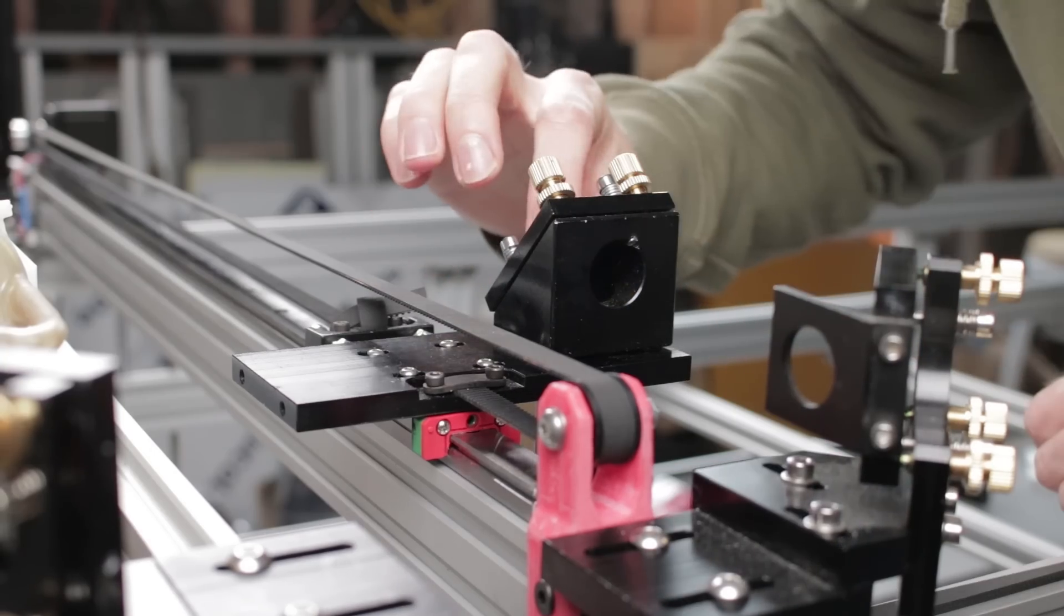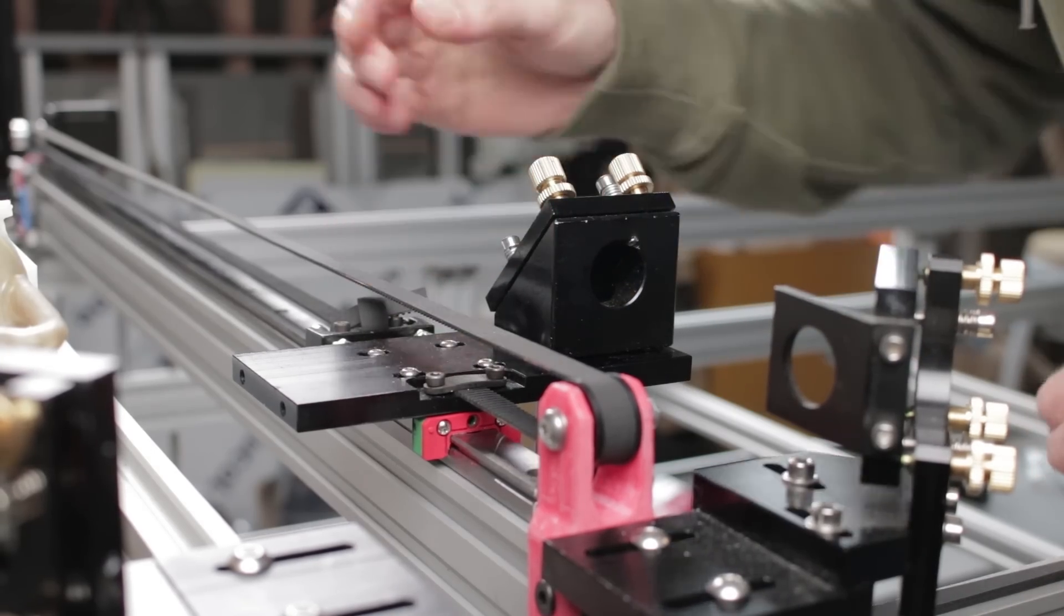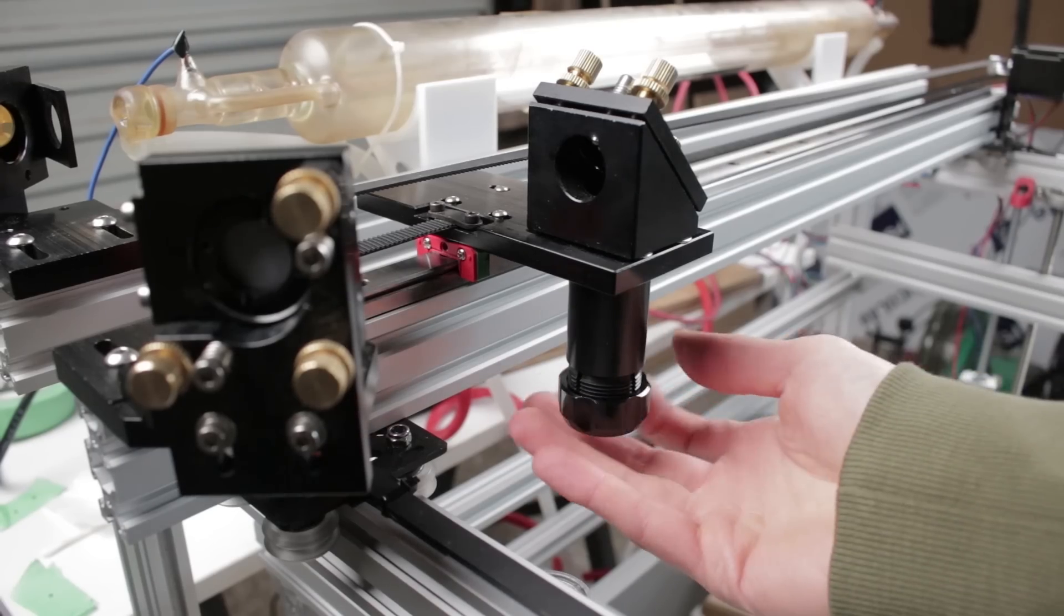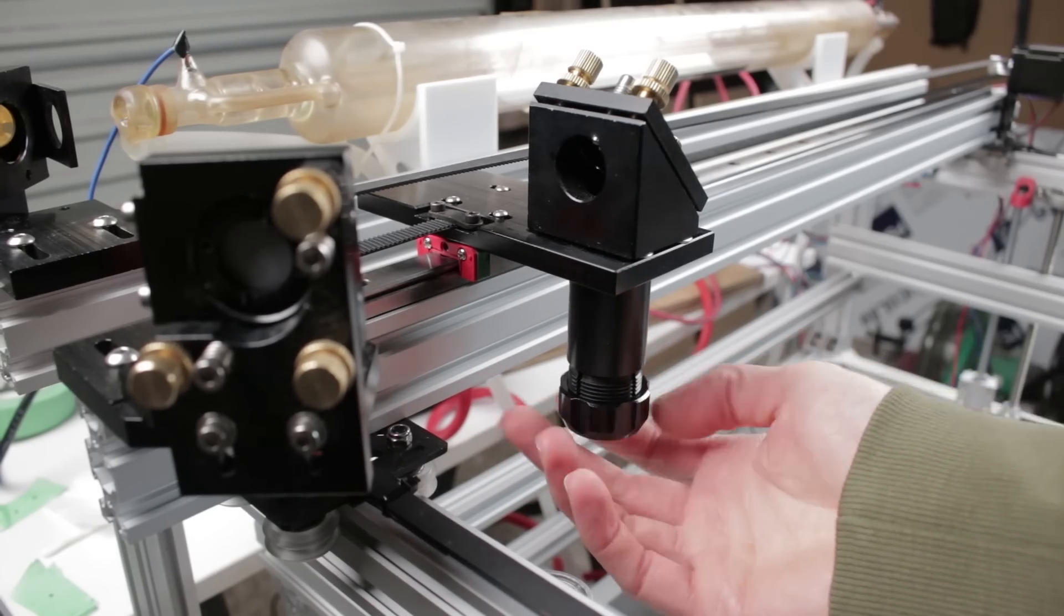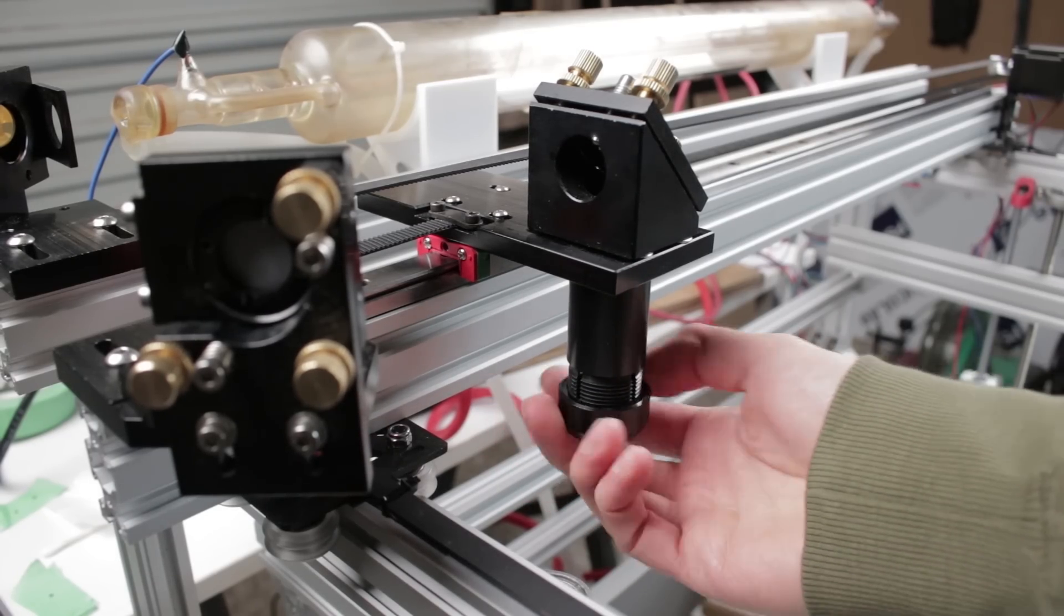With that sorted, I can now install the final mirror, mirror 3. This mirror bounces the laser beam downward along the Z axis into whatever it is we want lasered, and we still need to align it just like we did the others.